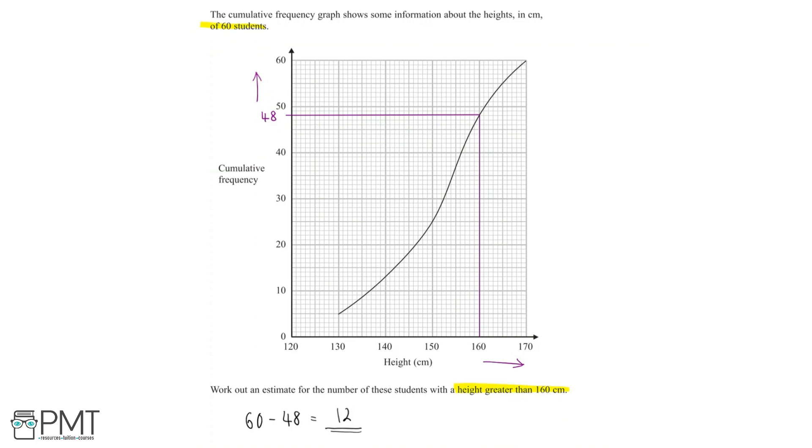Now this question is worth two marks, so let's take a look at where these marks are allocated. The first mark is for taking and reading from the graph at the point h equals 160 to find that the cumulative frequency at this point is 48. The second mark is for doing 60 take away 48 and for getting a final answer that the number of these students with a height greater than 160 centimeters is equal to 12.